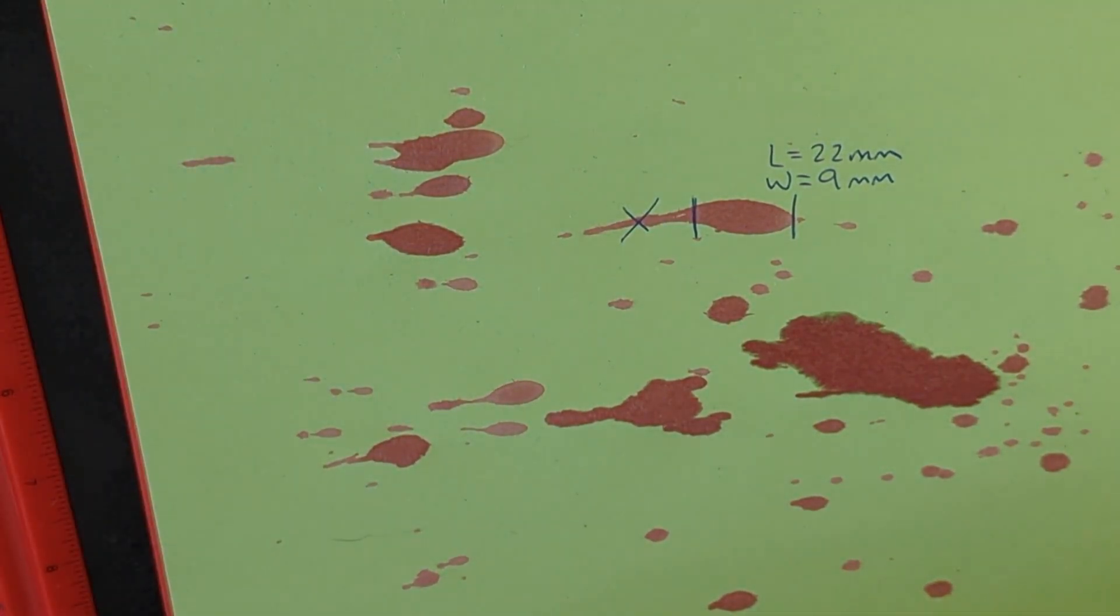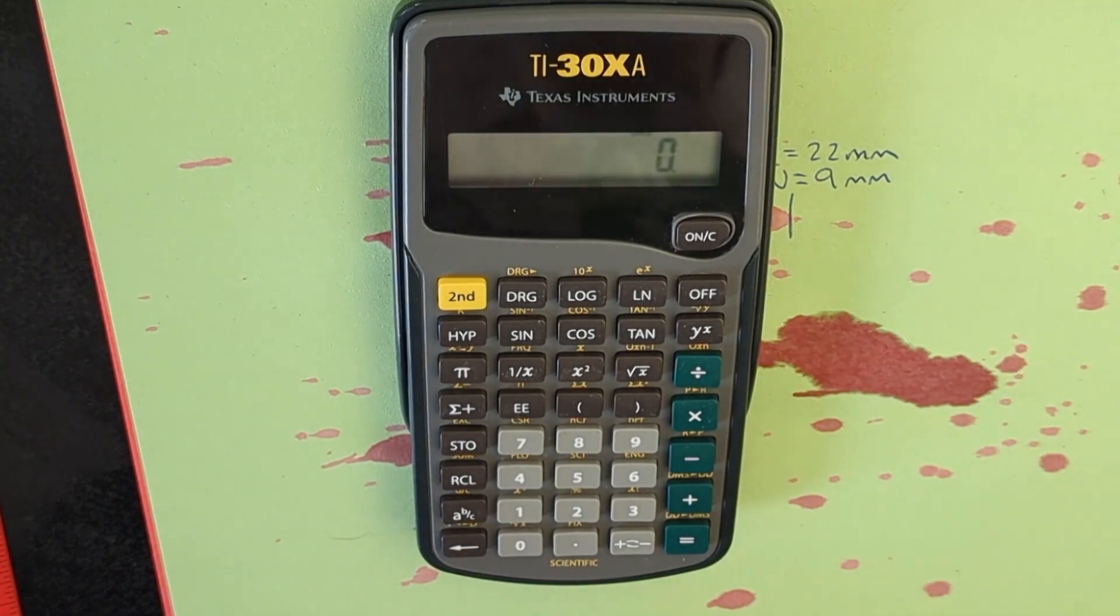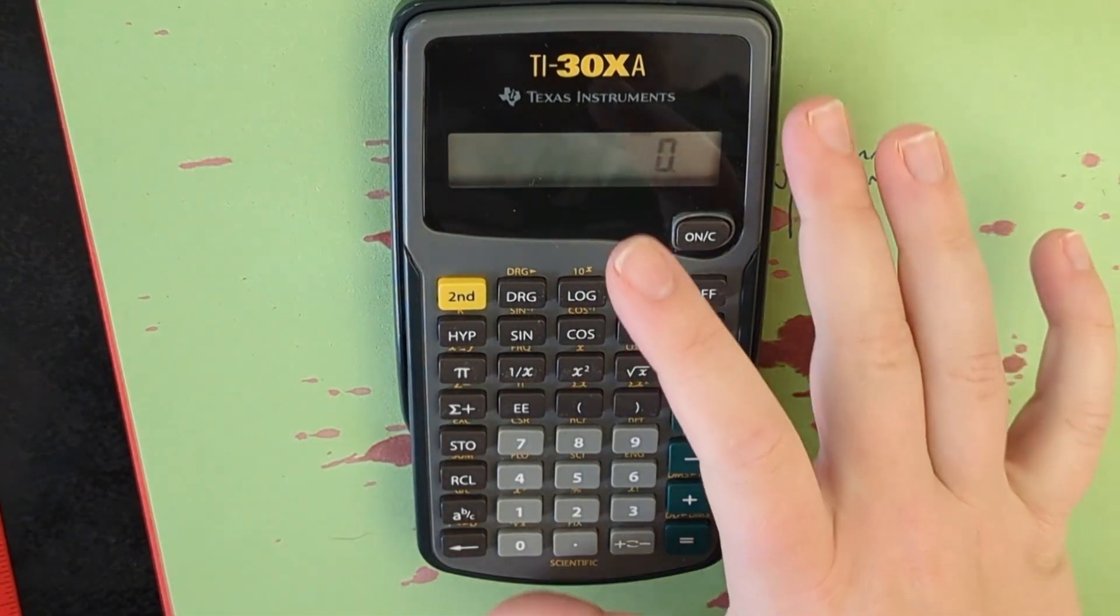When you're trying to find the angle of origin or the point of origin and the angle of impact you need to do this on a ton of different blood drops. This is just the first one. So let's get our calculators out, yes you can use your phone for this. Just make sure you have your phone tilted sideways for the full calculator. You'll need the scientific part as well.